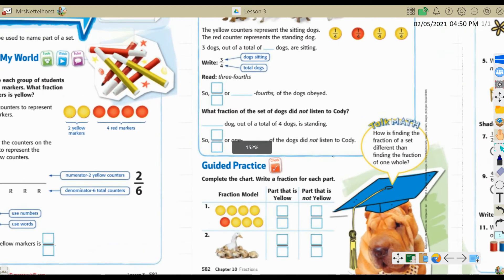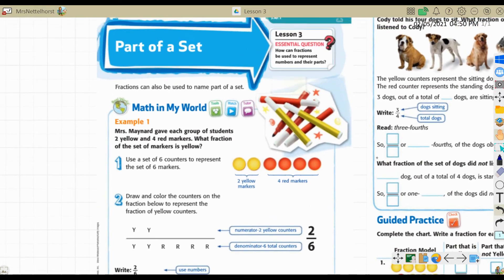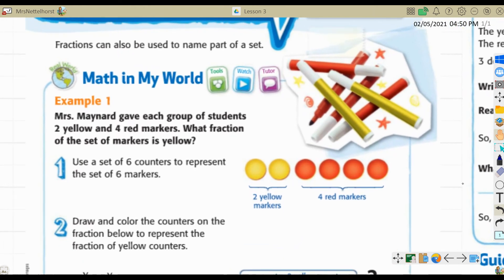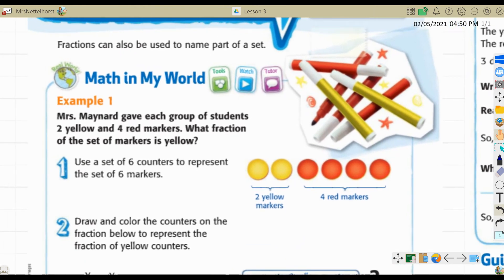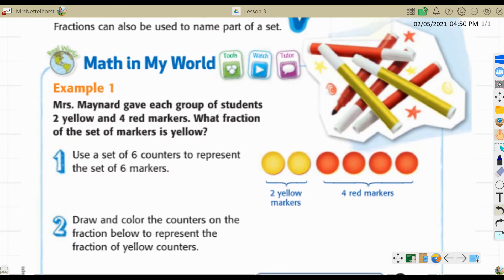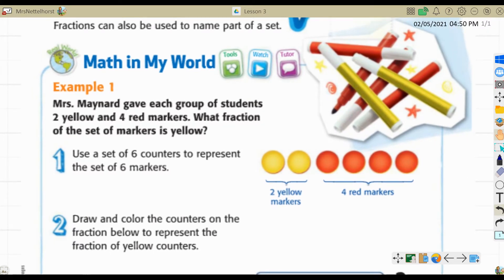Page 581, we are doing parts of a set. It says fractions can also be used to name a part of a set. We've been learning about parts of a whole where you have like a pie or a rectangle or something, and you divide it into equal parts. Now we're talking about a set of objects.